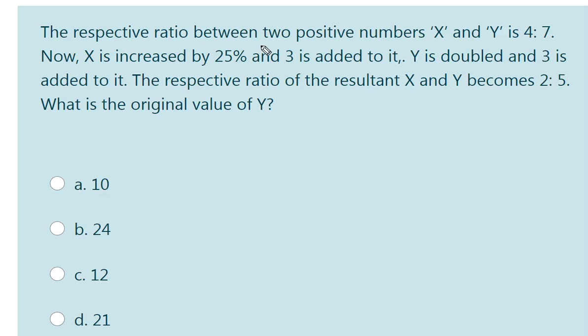The respective ratio between two positive numbers X and Y is 4 is to 7. Now X is increased by 25% and 3 is added to it. Y is doubled and 3 is added to it. The respective ratio of the resultant X and Y becomes 2 is to 5. What is the original value of Y?